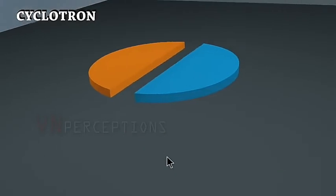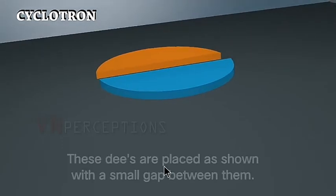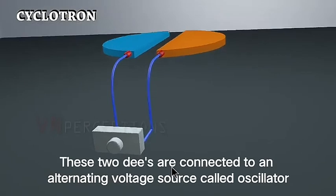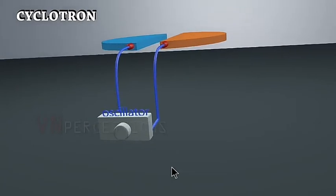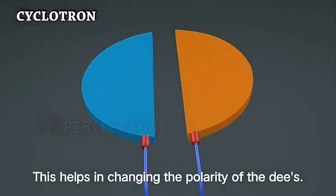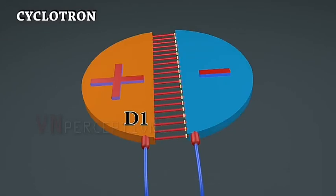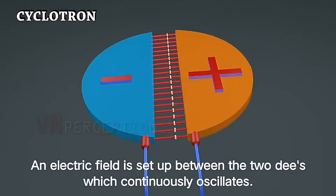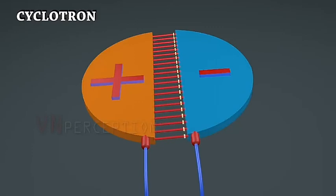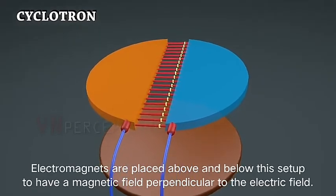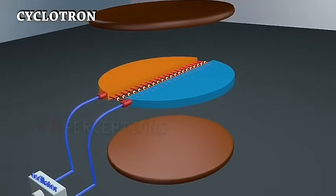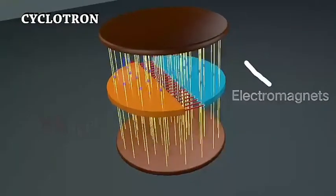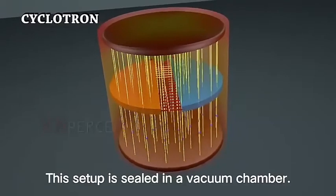Cyclotron consists of D's which are hollow half cylinders. There is a gap between these two hollow semi-circular cylinders, and these two D's are connected to an alternating voltage source called an oscillator. This oscillator changes the polarity of the D's so that the direction of electric field can be changed continuously. There is a magnet with north pole at the bottom and south pole at the top, giving a magnetic field from down to up. This whole setup is kept in a vacuum chamber.